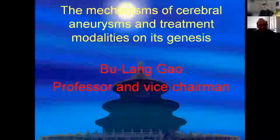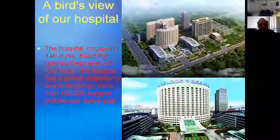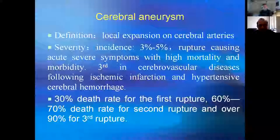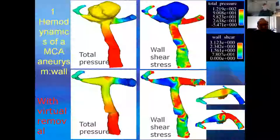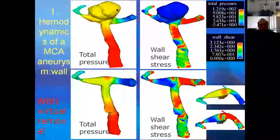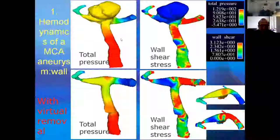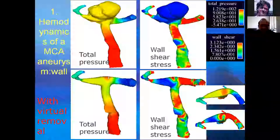This is the hospital overview. Cerebral aneurysm is actually a local expansion on several arteries. It's very severe — it causes death when it's ruptured. This figure demonstrates the hemodynamics of the MCA aneurysm. This shows total pressure and shear stress before the aneurysm was virtually removed. These two figures show after the aneurysm was virtually removed. At the top of the bifurcation wall, the total pressure is very high — it's red here, very high. For the shear stress, it's also very high, red as the blood flow impediment.